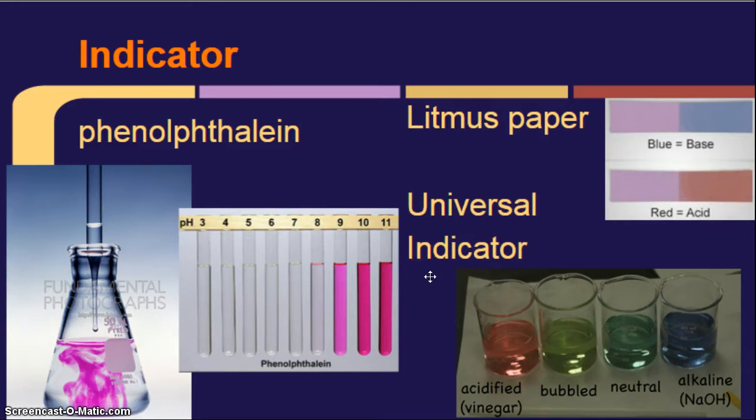There's another indicator called universal indicator, which changes to pretty much all the colors of the rainbow. It's actually really pretty. But, again, bases are blue.